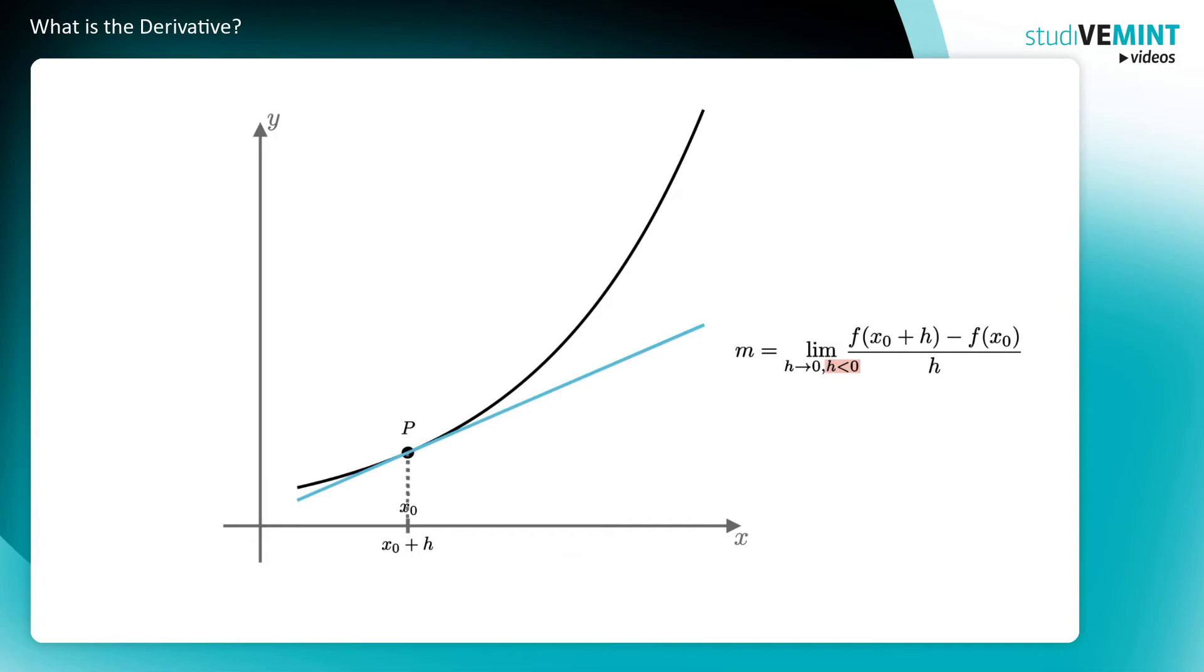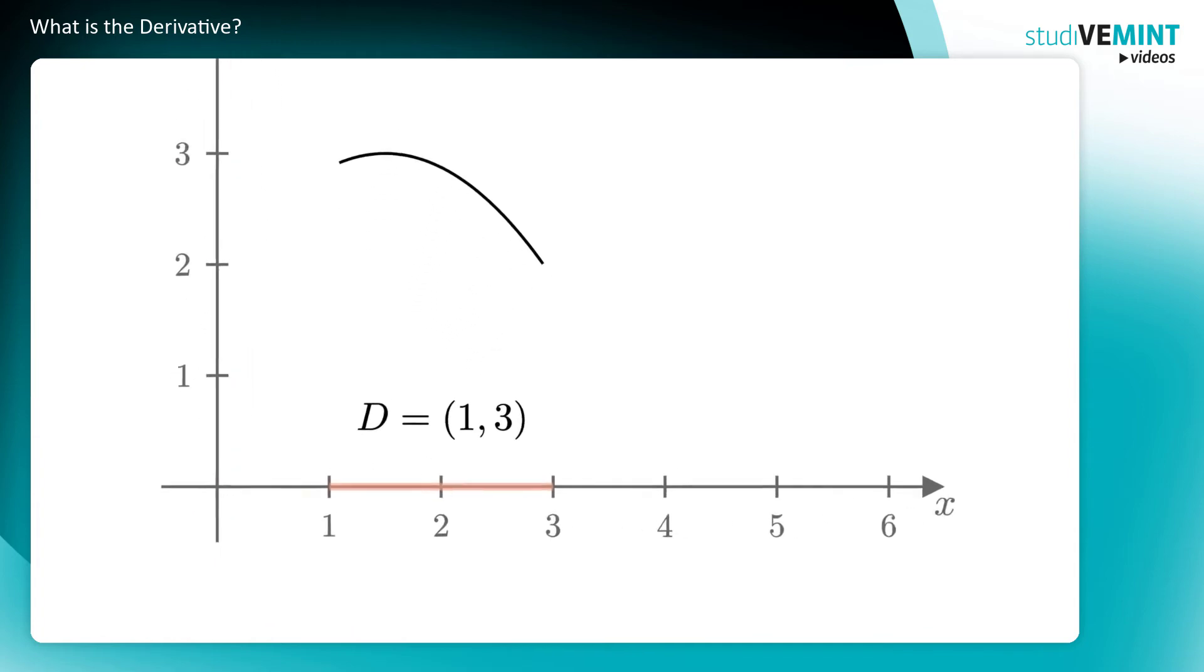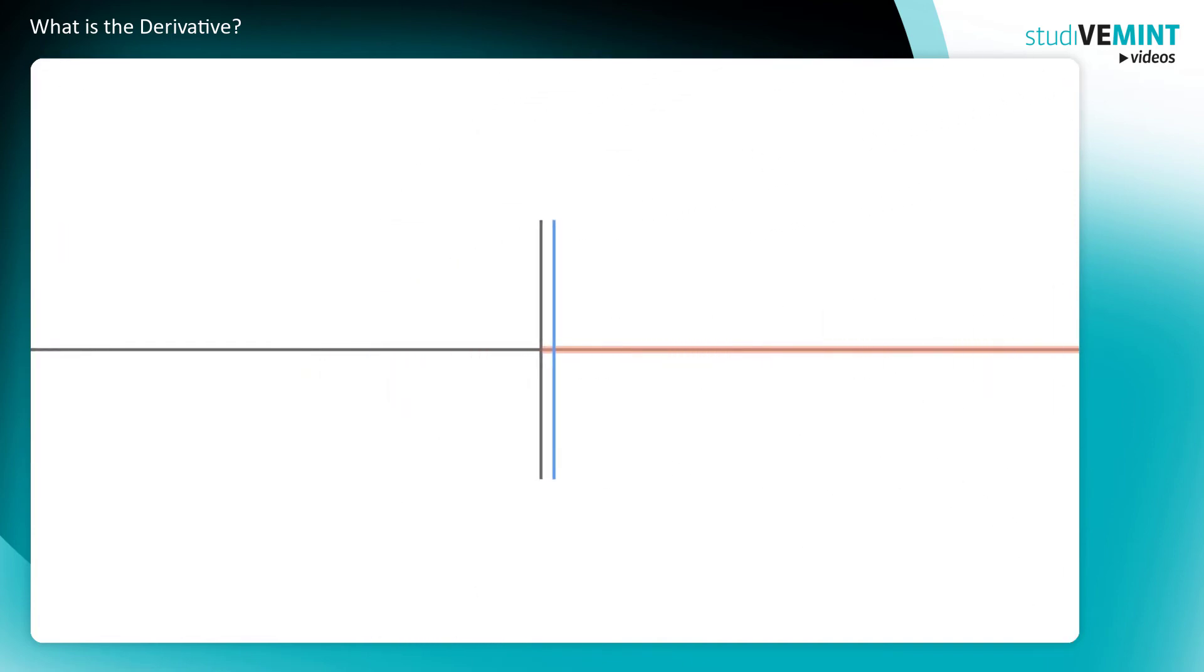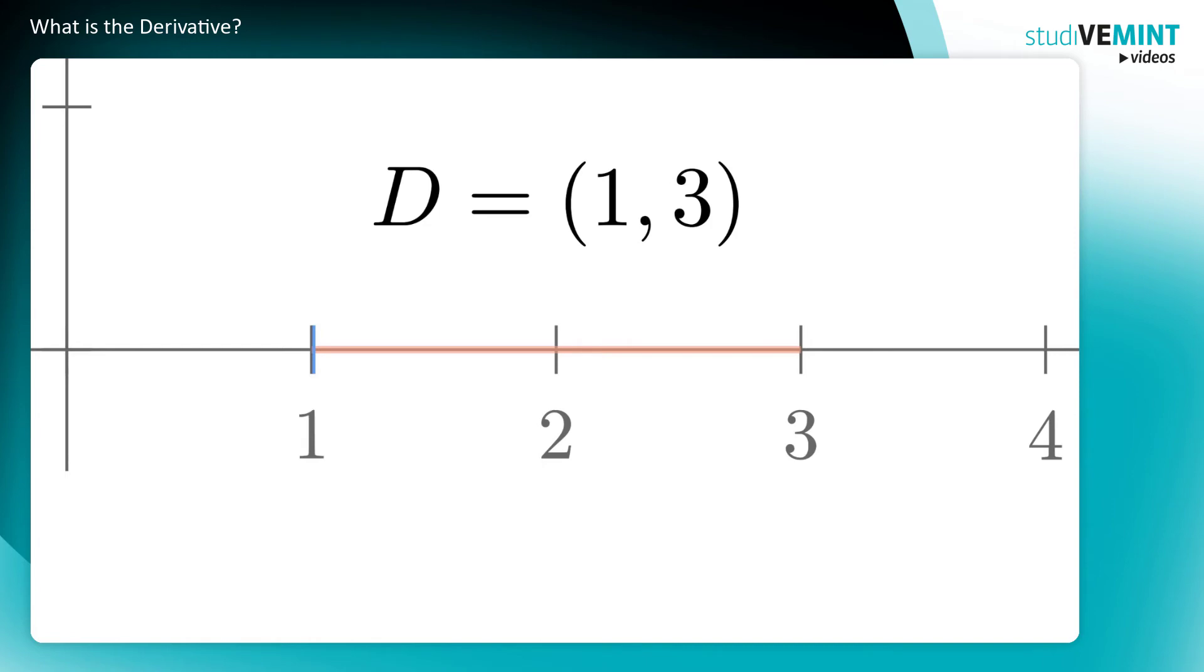You might wonder if you can reach every x₀ in the domain from both sides. As an example, look at this function with the open interval as its domain, and mark the domain on the x-axis. 1 itself is not in the domain. Imagine you have an x₀ close to 1. Here in the picture, it looks like you cannot approach it from the left-hand side. However, if you zoom into the x-axis, you can see that there are indeed points left of x₀ that are still in the domain. That is exactly the reason why the definition of differentiability requires the domain of f to be an open interval. In an open interval, you can always approach a point x₀ from both sides.